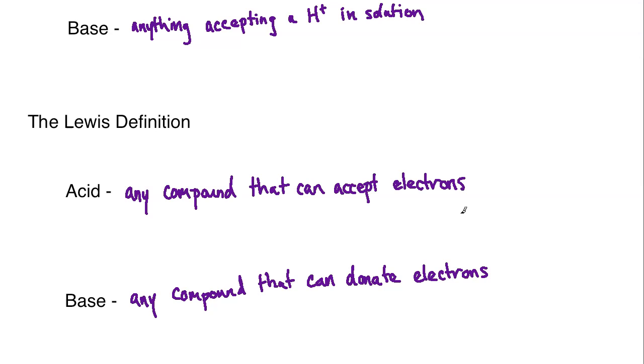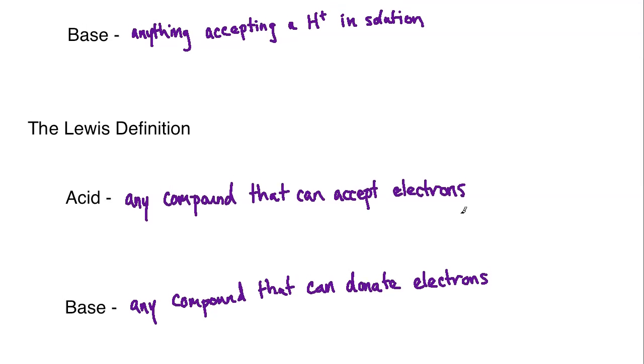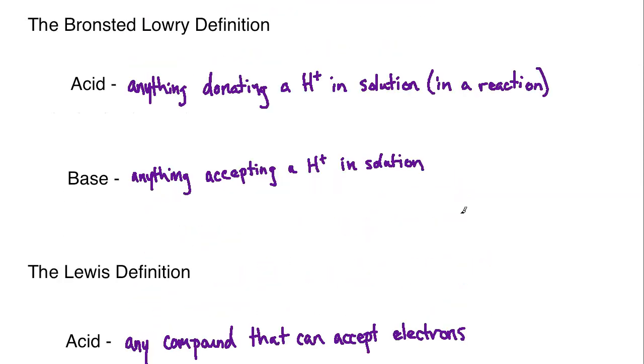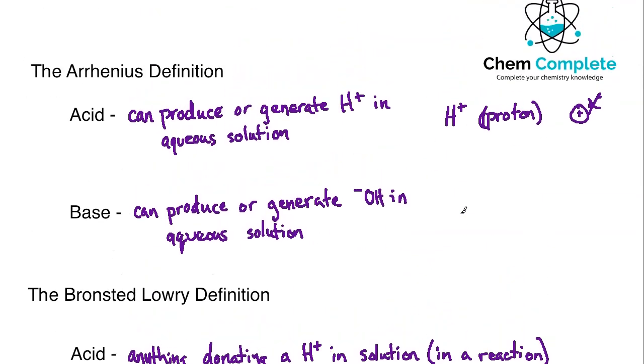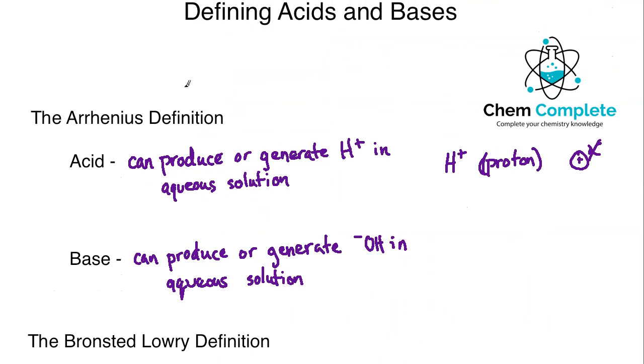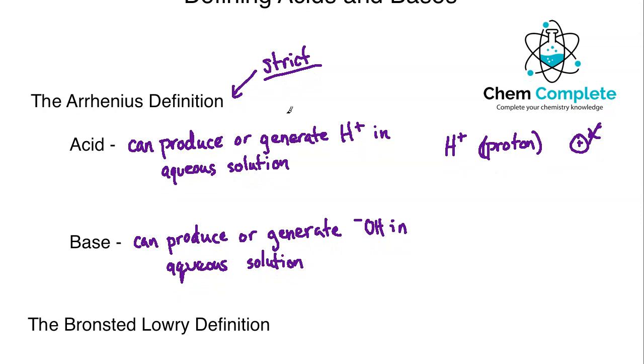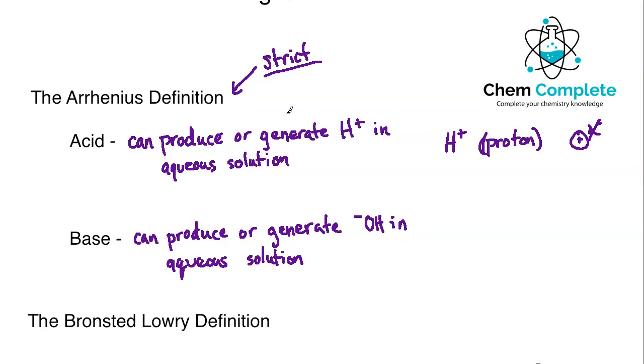Now, as far as which is going to be the strict definition versus which one would be broad, the strictest definition by far is the Arrhenius definition. And this one is so strict because it is stating that only a specific thing in each case has to be generated. It doesn't talk about any sort of acceptance of the same material from the opposite partner, meaning the acid or the base. And also, it has to be an aqueous solution.